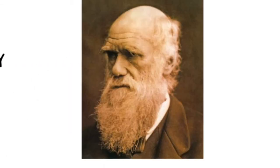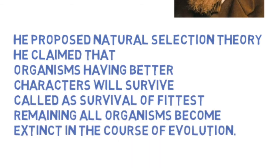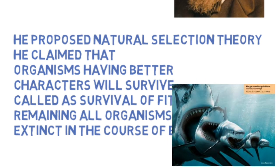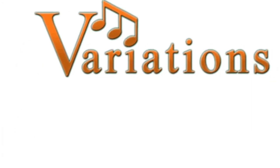Coming to Darwin's theory. Darwin is a famous scientist who traveled on the HMS Beagle and wrote an important book called Origin of Species. In his natural selection theory, he claimed that organisms having better characters — that is, better variations — will only survive in the course of evolution. Those organisms are called the 'survival of the fittest,' generally the smarter, more intelligent, and stronger organisms. The remaining organisms with weak characters or bad variations become extinct in the course of evolution, because they cannot sustain themselves against those with stronger characters.